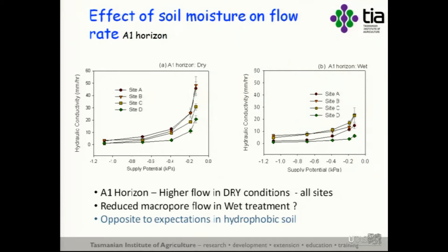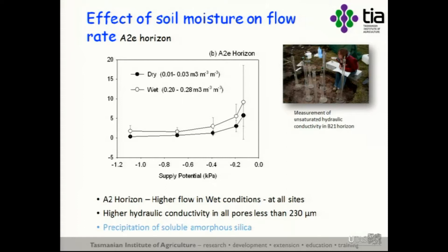Looking at the effect of moisture content and hydraulic conductivity — the flow rate through mesopores versus macropores. What we see in the A horizon is the complete opposite of what we expect. Flow rates are lower in the A horizon when wet. So once you've overcome water repellency, you'd expect infiltration rates to increase — but they've actually decreased, particularly the macropore flow component.